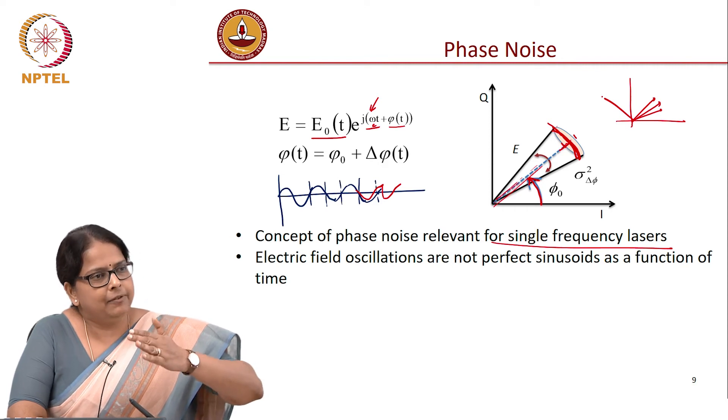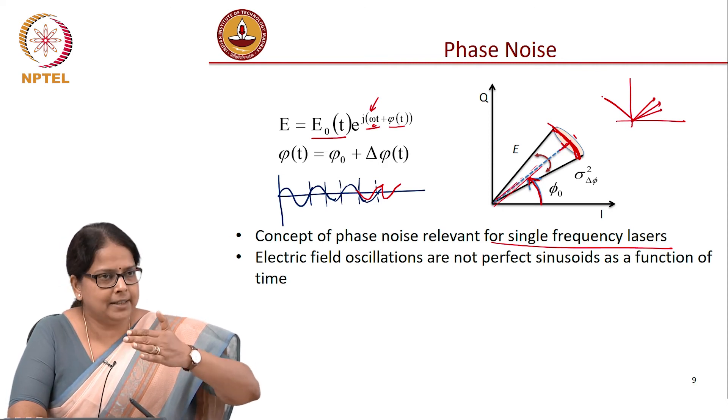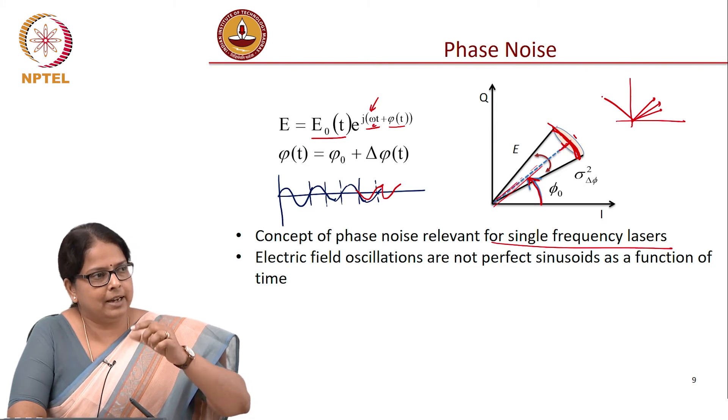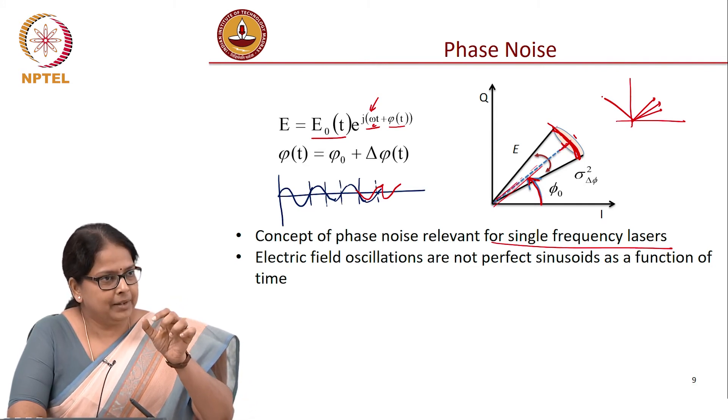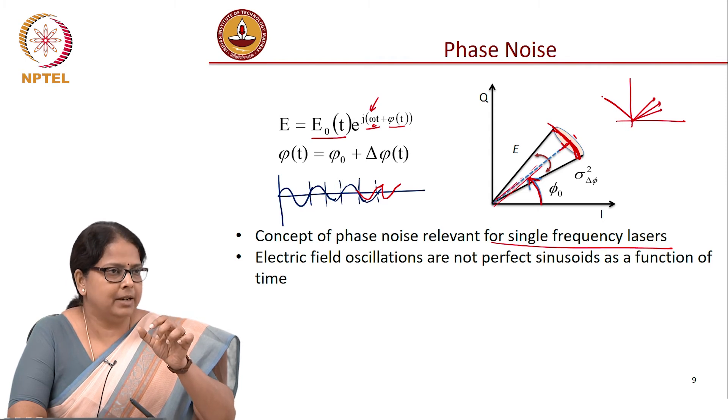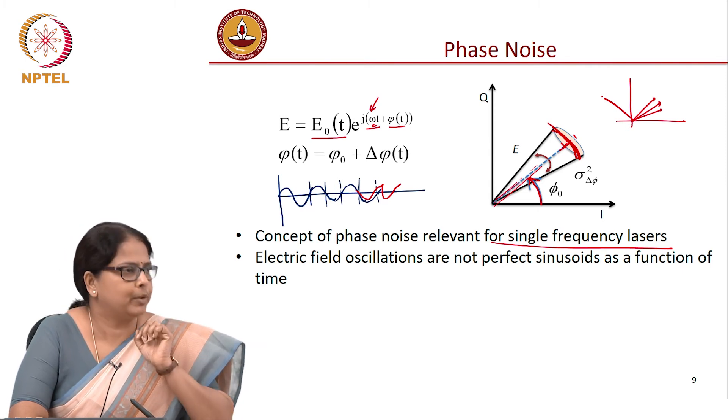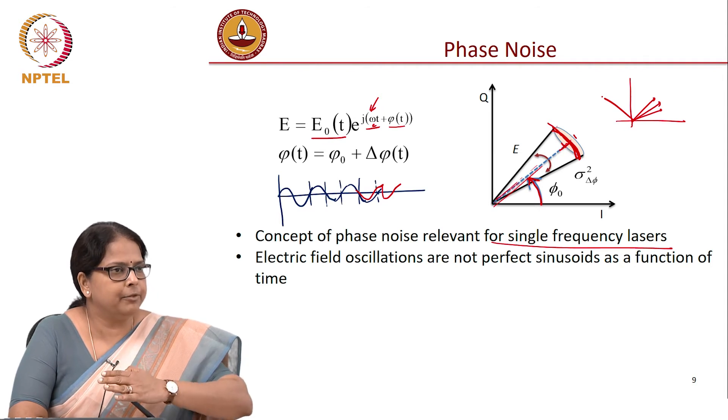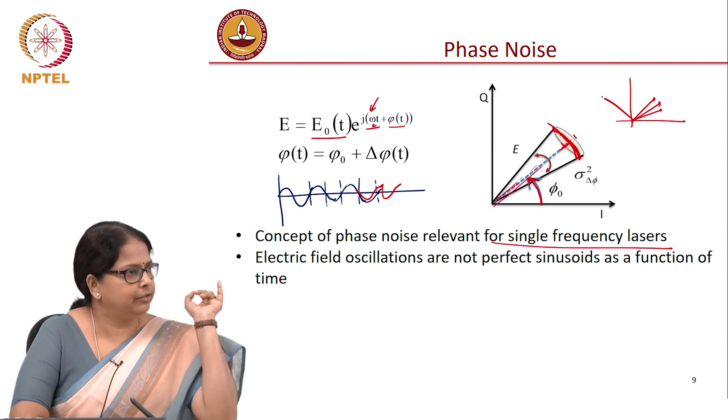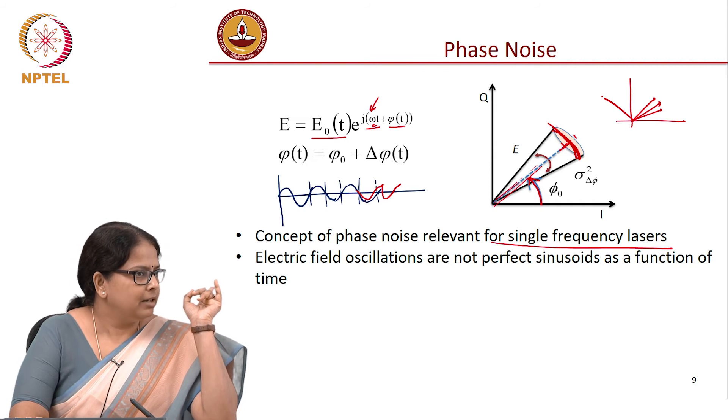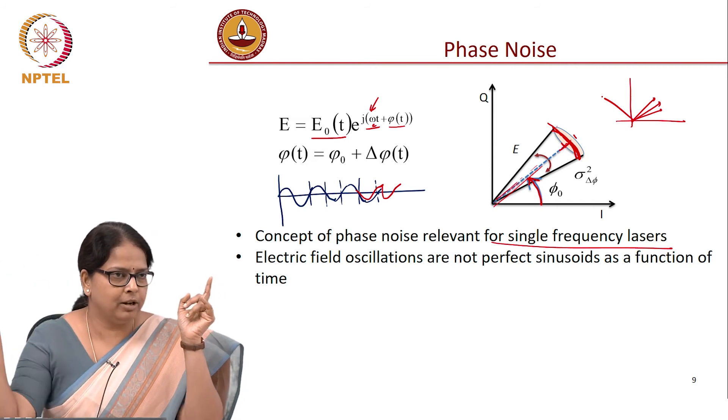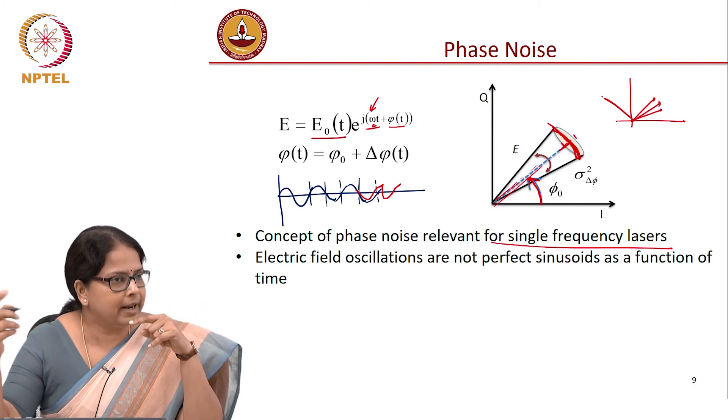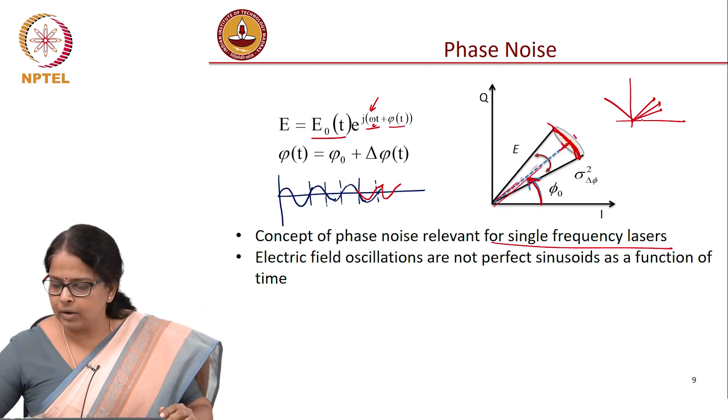Which means that the phase noise, the phase at every instant of time or if you were to calculate the delta phi, that is a random variable which follows random walk process. Meaning, it will not suddenly jump from 45 degree to 185 degree. Noise should actually allow you to do that, if it is just a Gaussian noise, but it is because of the random walk process.